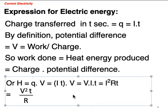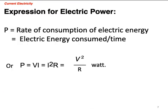These relations lead us to the expressions for electric power. Power is rate of consumption of electric energy, which is electric energy consumed divided by time, which is VI because VIT upon T, or I²RT upon T that gives you I²R, or V²T by R divided by T.